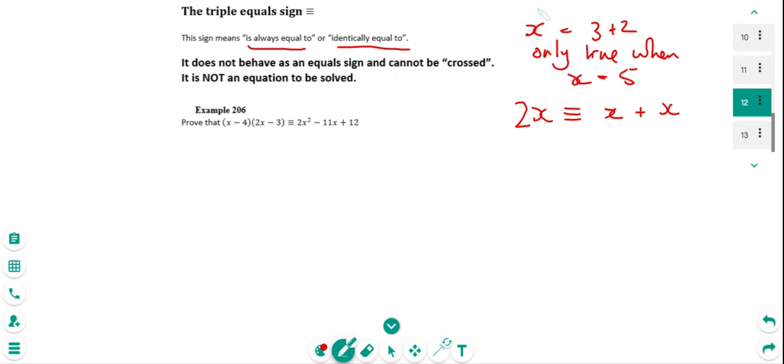Because it's true for all values of X. So whereas the top one's only true for a specific value of X, this one is true for X equals 5, 6, 7, anything that we like at all. OK, so that's what the triple equals means. All values of X or whatever the variable might be. In all cases, it's true.